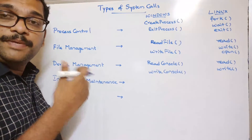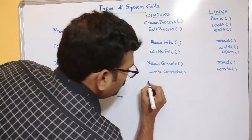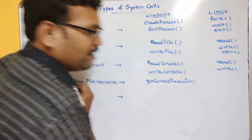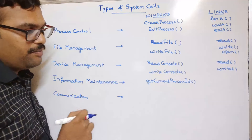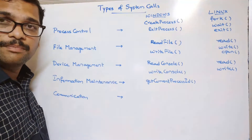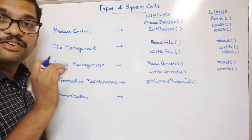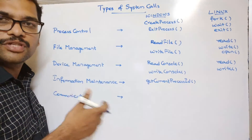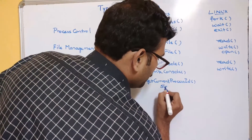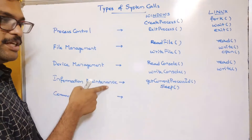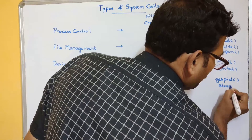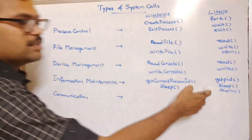For information maintenance — where information is exchanged between different processes — in Windows we use GetCurrentProcessID and sleep. Every process has an ID; these are maintained in a system table and executed based on priority. In Linux, we use getpid, sleep, and alarm. These are a few system calls regarding information maintenance.